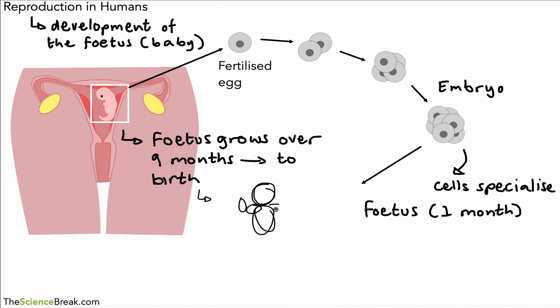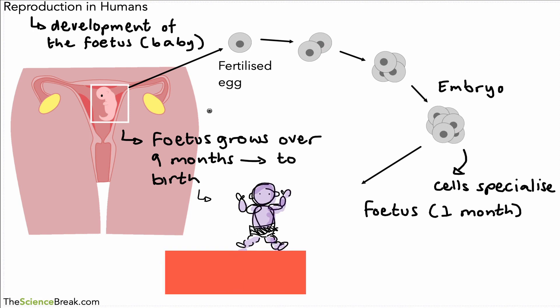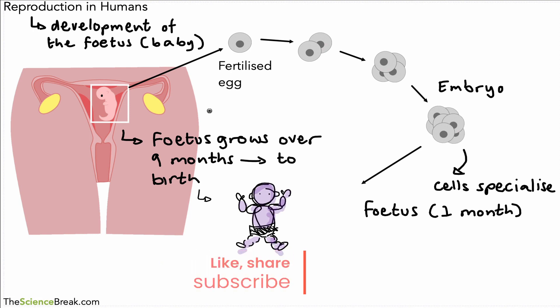The fetus grows over a period of about nine months until we have birth. So then we have birth — here is a little sketch of a baby, though again the scale is not quite right compared to the fetus. So that was reproduction in humans — how egg cells and sperm cells join together to produce a fetus and then a developing baby.